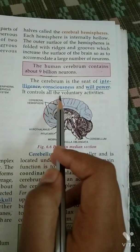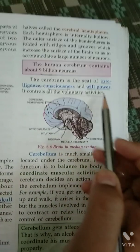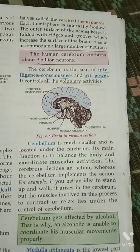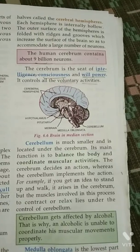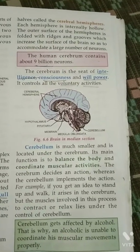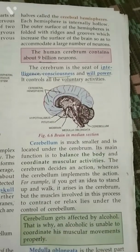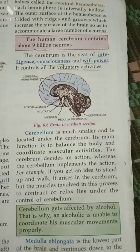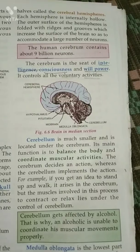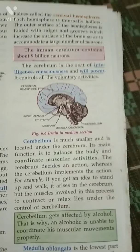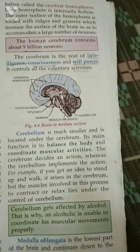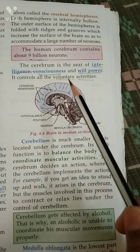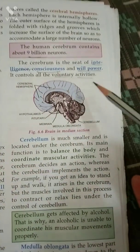The cerebrum controls all voluntary activities. Voluntary activities are what we do by choice — for example, lifting hands. Involuntary activities are those we do without conscious control, like the beating of the heart, working of kidneys, and working of lungs. The cerebrum controls voluntary activities.